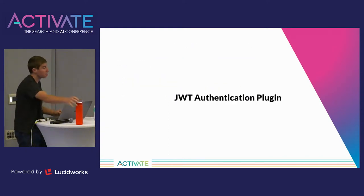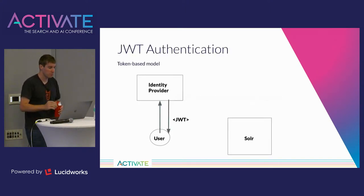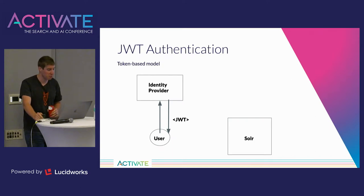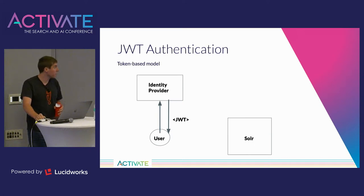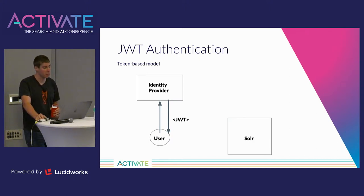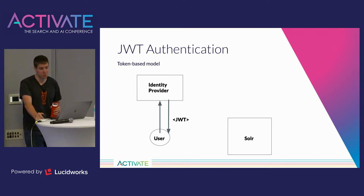Let's spend a little time talking about the JWT authentication plugin. JWT authentication in Solr, or in any system, is really a two-step process. First, users send a request to a server called an identity provider — sometimes called an authentication or authorization server. The user sends credentials or some secret to the identity provider to prove who they are. The identity provider replies back with a token containing the user's name and timestamps for when it was issued and how long it's good for, signed by the identity provider so nothing can be tampered with.